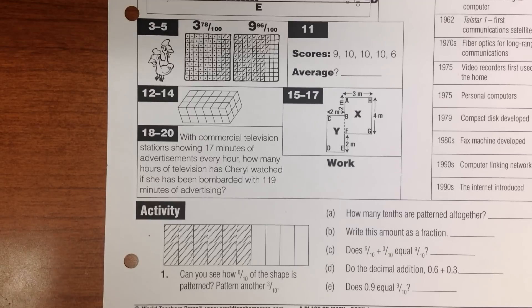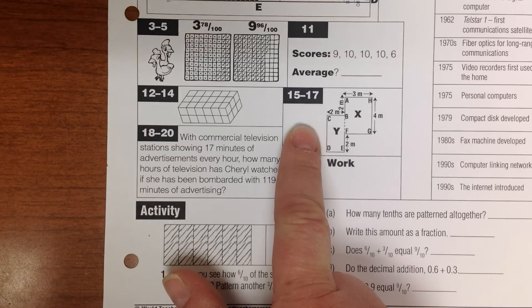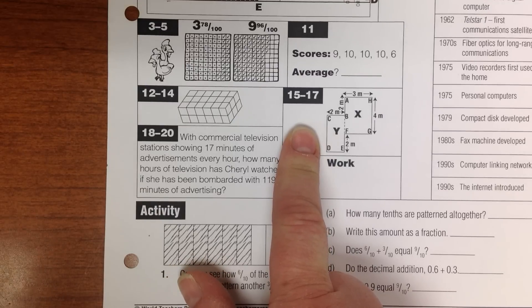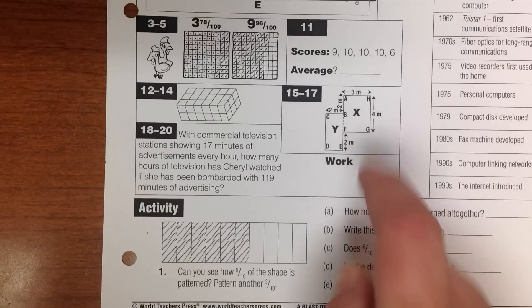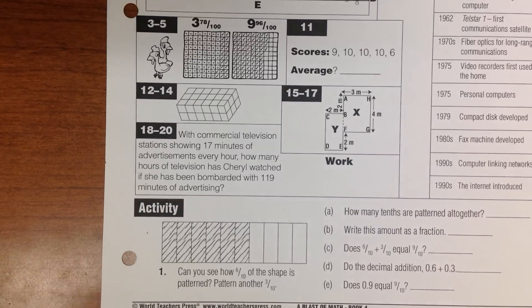The next three questions are about the ABCDEFGH shape on your paper. Number 15. Write the area of shape X. So the area of this one. Write the area of shape X in square meters.